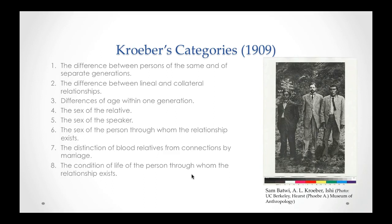The terminology can change based on generations — referring to people within your generation or outside of it. Also between lineal and collateral relationships, differences of age within a generation, the sex of the relative, or the sex of the speaker. We have aunt and uncle: both are siblings of your parent, but they have different terms because of the sex of the relative. In some places, the term will change based on the sex of the speaker, so what I might refer to one way, my brother will use different terminology. Sometimes the sex of the person through whom the relationship exists is important — that's where you'll see different terminology for an aunt on your mom's side versus an aunt on your father's side.